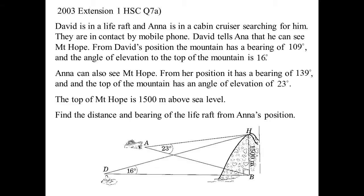All right. An HSC one. A 3D trig question. Let's just read through this question here. David is in a life raft, and there's a little picture of a life raft down there. Anna is in the cabin cruiser. I don't think too much about their scale. But anyway, look at the size of the life raft compared to the cabin cruiser. David tells Anna, who has changed the way she spells her name, that he can see Mount Hope.